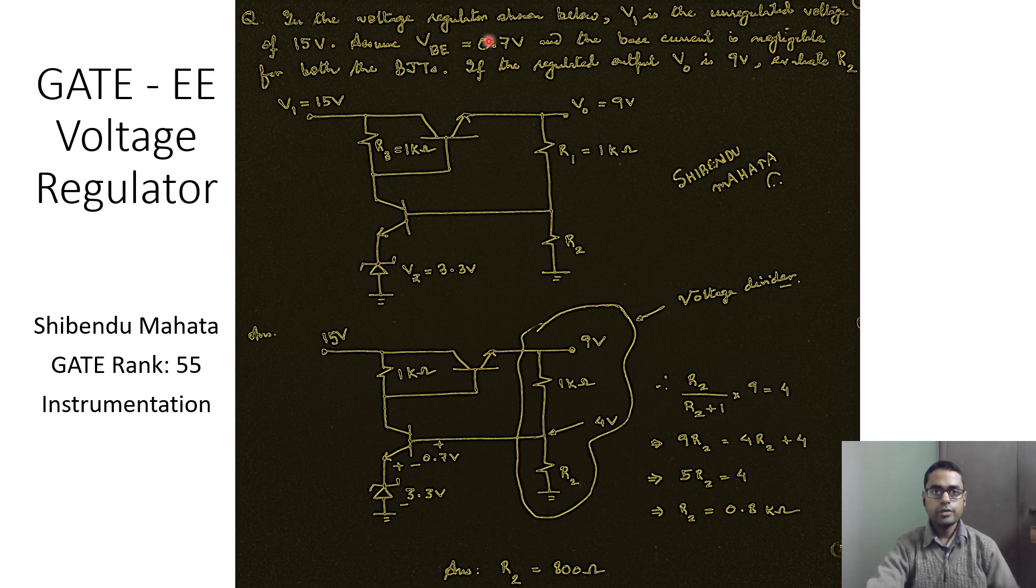Here is the problem statement. In the voltage regulator shown below, V1 is the unregulated voltage of 15 volts. Assume Vbe equal to 0.7 volt and the base current is negligible for both the BJTs. If the regulated output V0 is 9 volt, evaluate R2.